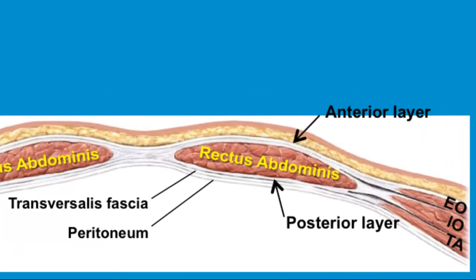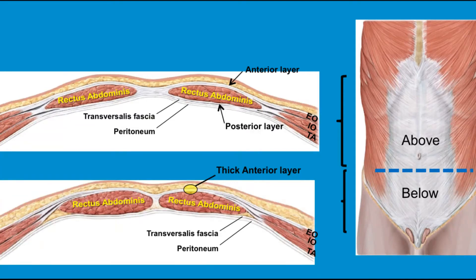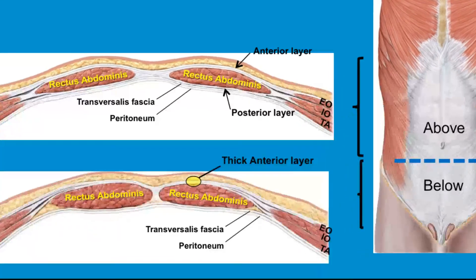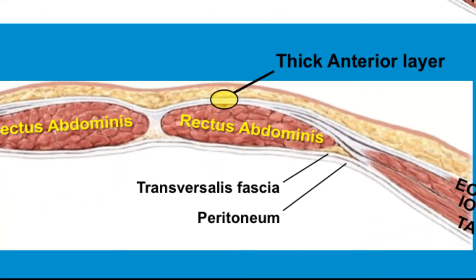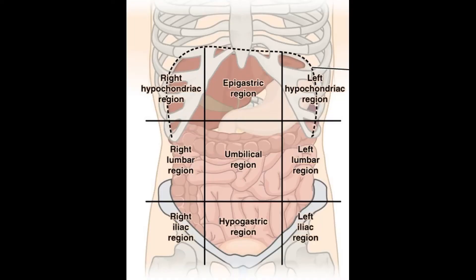Above the arcuate line, you've got the aponeurosis of the muscles going from both the anterior and posterior side of the rectus abdominis. But below the arcuate line, you've only got it going from the anterior side, so you've got a thicker anterior layer. It's important to know there's a difference between the upper and lower abdominal wall.